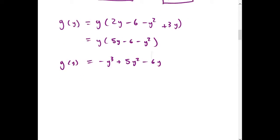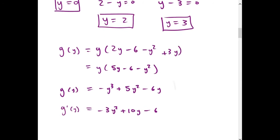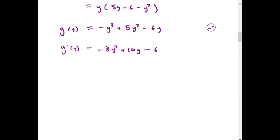So now we can differentiate g and get -3y² + 10y - 6. So to find each of the eigenvalues, we just plug in our equilibrium points that we found. So we're going to plug in 0, we're going to plug in 2, and we're going to plug in 3.